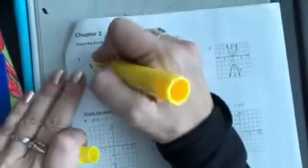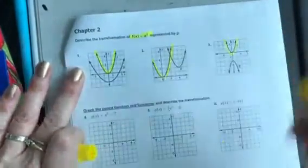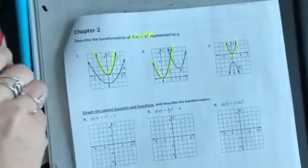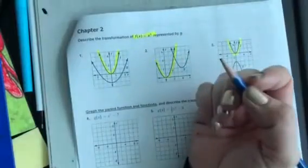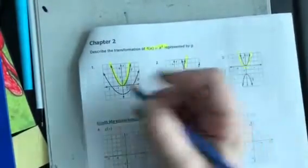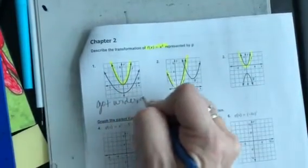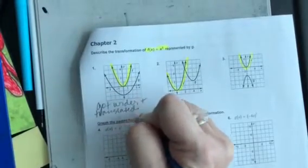My parents are all... I always know where my parents are. And then the question is, how is G transformed? For me, on number 1, it looks like two things happened. It looks fatter? And what else? And it slid down two. So, it got wider and translated down two.